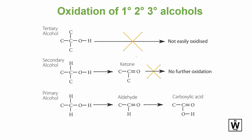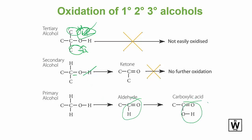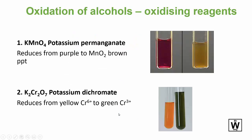Now we can look at oxidation. We need an oxidizing agent — something that gets reduced. Tertiary alcohols do not get oxidized because these groups cause steric hindrance; the 3D orientation blocks things from coming in and reacting. With secondary alcohols there's limited oxidation, but with primary alcohols there are different stages of further oxidation. Secondary alcohols go to ketones; primary alcohols go to aldehydes and then carboxylic acids.